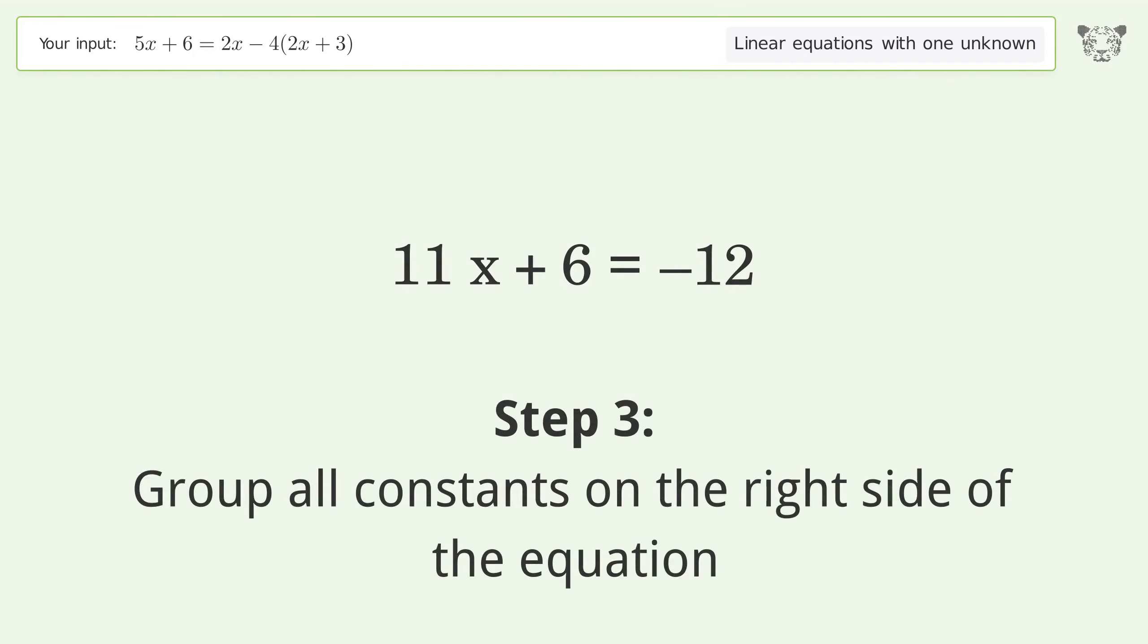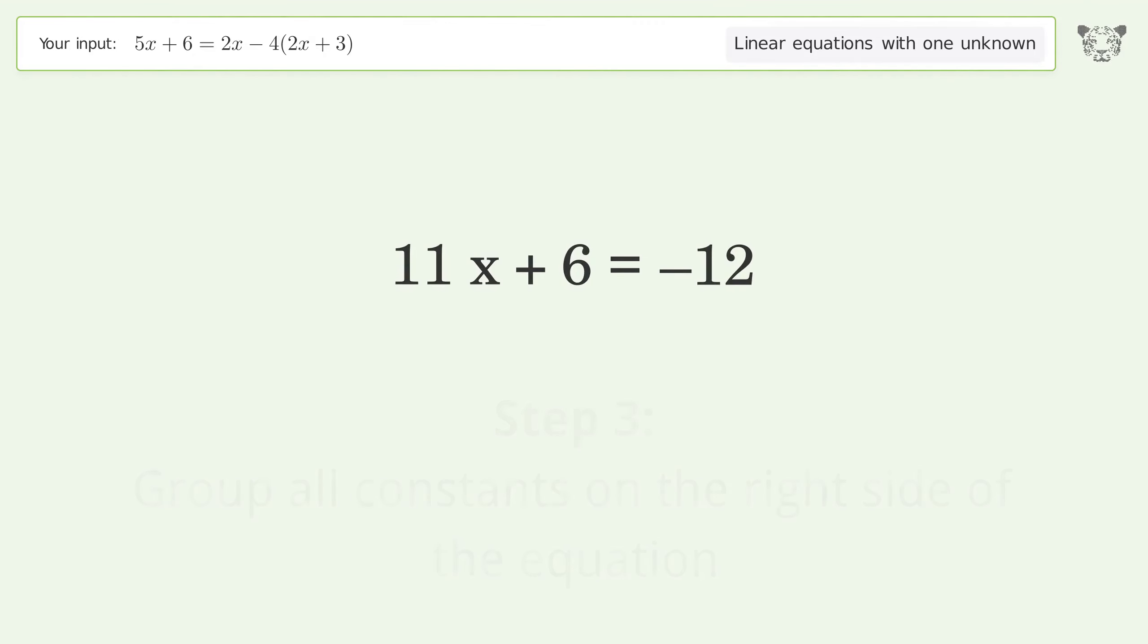Group all constants on the right side of the equation. Subtract 6 from both sides. Simplify the arithmetic.